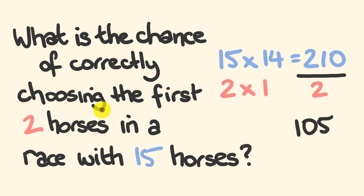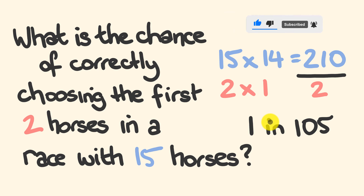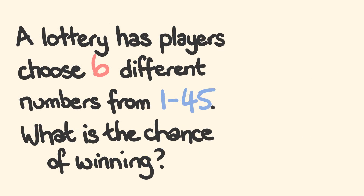The chance of correctly choosing those first two horses in a race with 15 horses is 1 in 105. Pretty cool! I'm going to leave the last question for you to answer in the comments. If you like this video, hit the like button, subscribe, and maybe consider becoming a patron. For the next question — based on a lottery in Australia — a lottery has players choose six different numbers from balls numbered 1 through to 45. What is the chance of winning this lottery? The numbers are bigger, so be careful. Put your answer in the comments. Thank you for watching, see you next time!